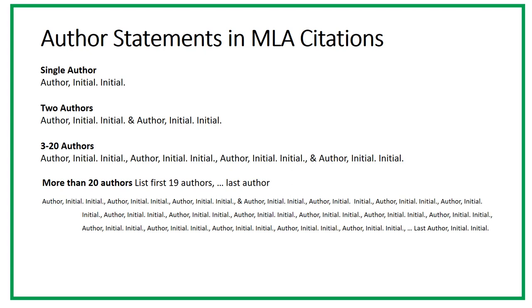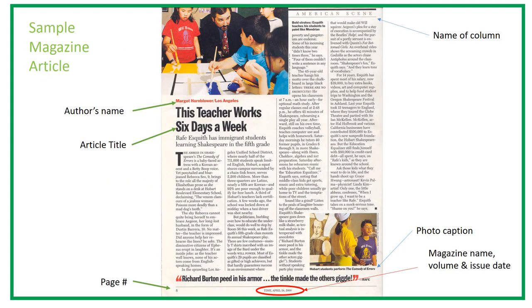If there are any titles for the authors, such as doctor or senator, do not include them. The only titles that are used are for kings or queens of specific countries. If no author is available, begin the citation with the title of the article, and the date statement follows. Begin by identifying the citation elements — some of them may be hidden or in small print. Notice that this magazine article is just one article of a regular column in a magazine, but the name of the column is not included in the citation. You might need to refer to the front cover for the volume and issue numbers.